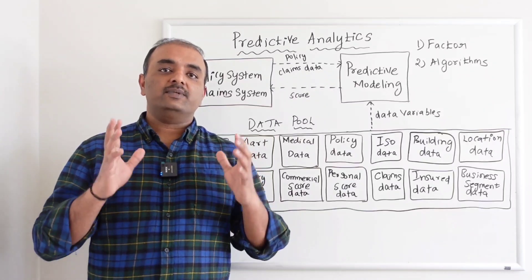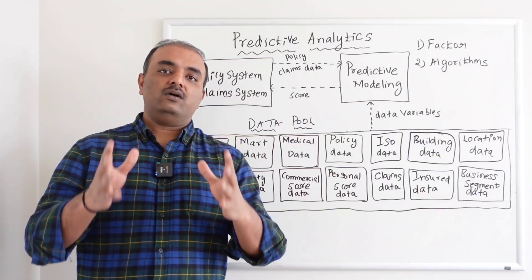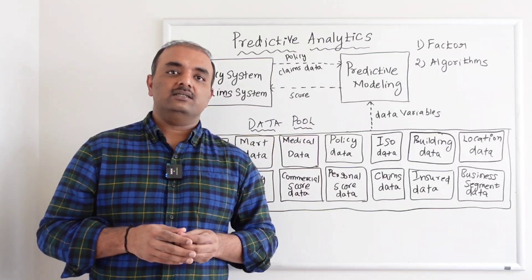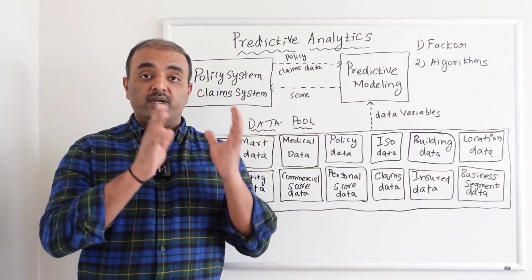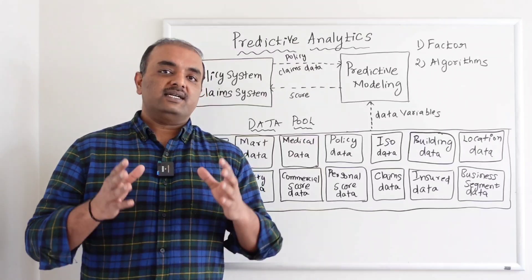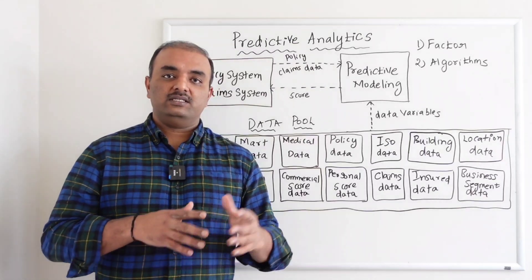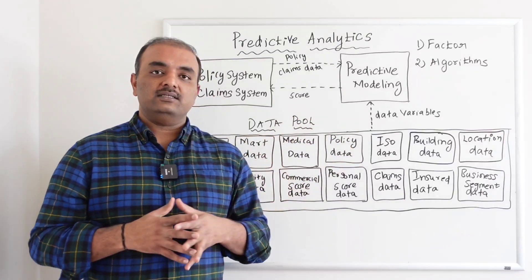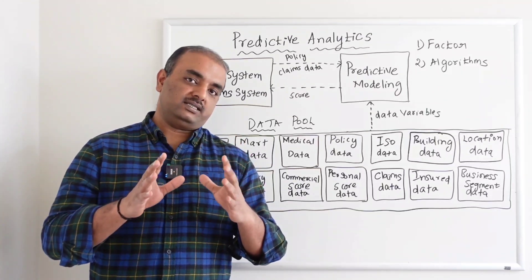Once they analyze the data, they will come up with some kind of scores saying that this customer will have a score of 20, which means underwriters will know that this customer is a very favorable customer, hence they will give less premium. If I have a customer who is having a score of 70 or 80 based on this calculation, then the underwriters can decide this particular customer is not a favorable customer.